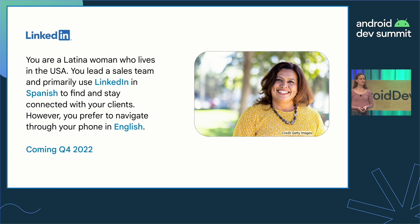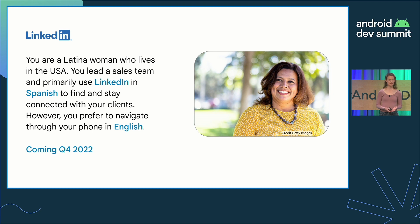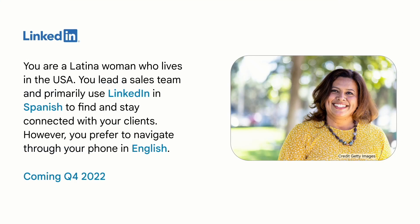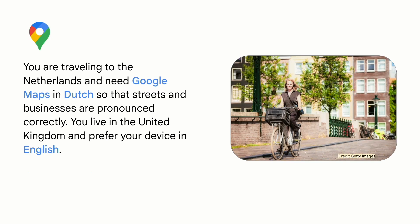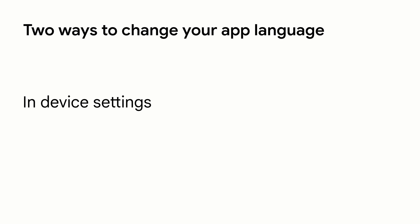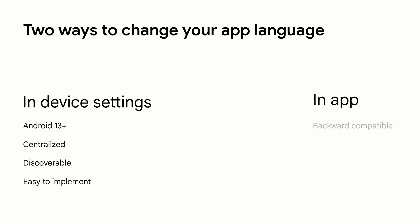Our first user journey: imagine you are a Latina woman who lives in the United States. You lead a sales team and primarily use LinkedIn in Spanish to find and stay connected with your clients, but you prefer to navigate your phone in English. As another user journey, imagine you are traveling to the Netherlands and need Google Maps in Dutch so that streets and businesses are pronounced correctly, while you live in the United Kingdom and prefer your device in English. This feature allows multilingual users to set their app language independently of the system language. As a developer, you can provide this functionality in two ways: in device settings, available in Android 13 and above, which is a centralized and discoverable location that's super easy to implement; or you can create an in-app language picker, which can be backwards compatible. If you do both, they sync for free.